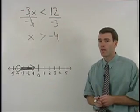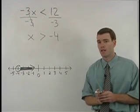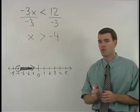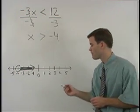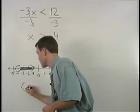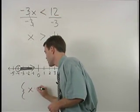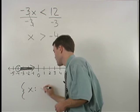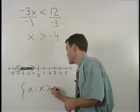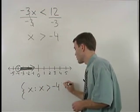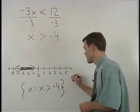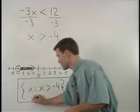Finally, we put our answer in what is called set notation, which is written in the following way: the set of all x's such that x is greater than negative 4. And this is our final answer.